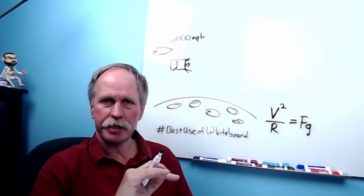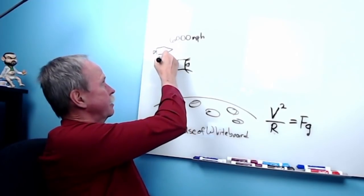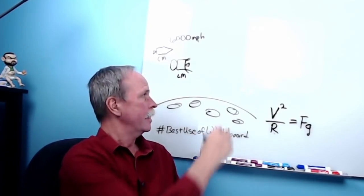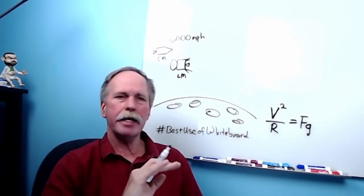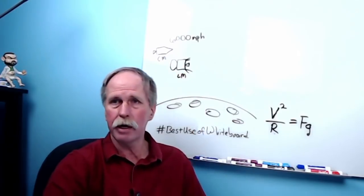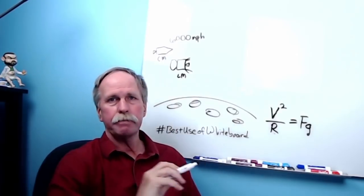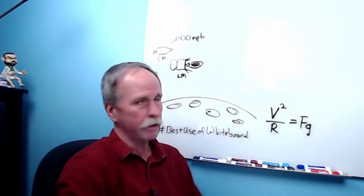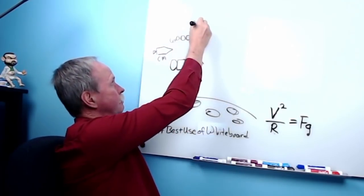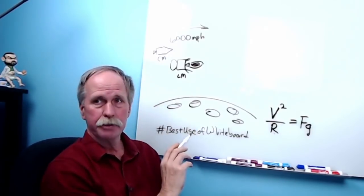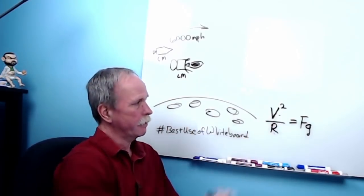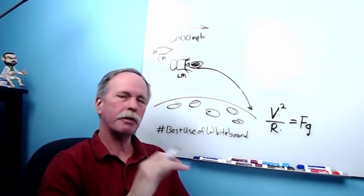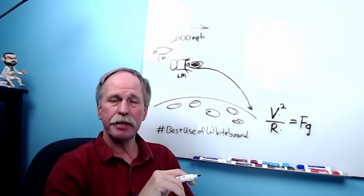In July 1969, the command module and lunar module were in lunar orbit buzzing along at about 6,000 miles an hour in an elliptical orbit. The command module stayed in orbit, but the lunar module separated and had to slow down to land on the moon. It fired its rockets in the opposite direction of travel, slowing down, which decreased the radius. As it slowed down, it descended closer and closer to the moon until it matched the rotational speed of the moon and touched down.